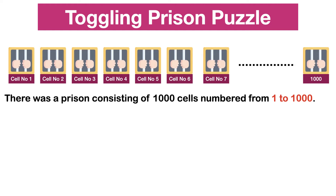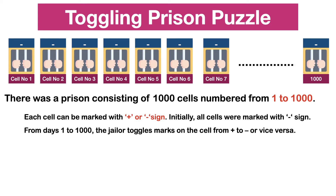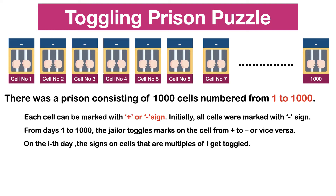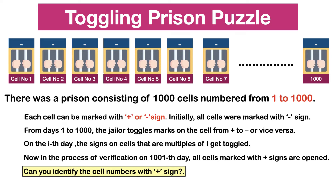The puzzle states that there was a prison consisting of 1000 cells numbered from 1 to 1000. Each cell can be marked with a plus or minus sign. Initially all cells were marked with a minus sign. From days 1 to 1000, the jailer toggles marks on the cell from plus to minus or vice versa. On the i'th day, the signs on cells that are multiples of i get toggled. On the 1001st day, all cells marked with plus signs are opened. Can you identify the cell numbers with a plus sign?